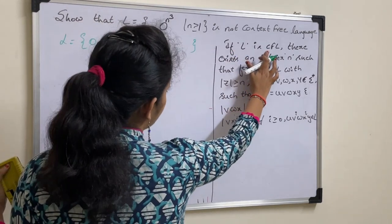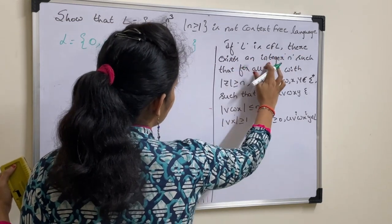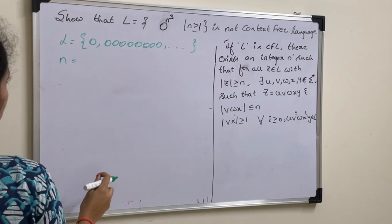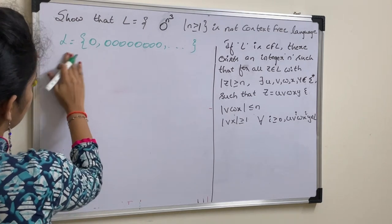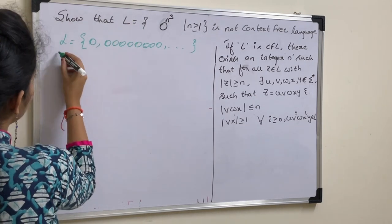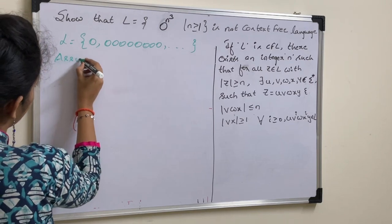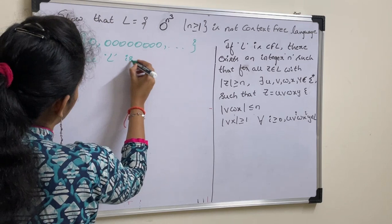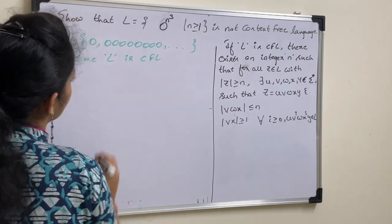Now, if L is a context free language, there exists an integer n. You need to take one n value. Before this, first assume that the given language is a context free language. Assume L is context free language.